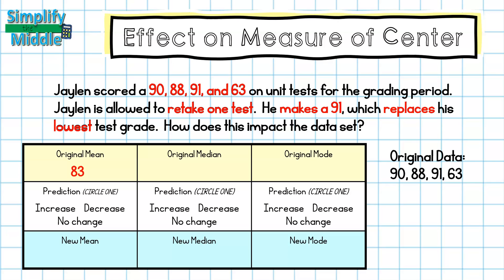Let's find our median. We need to put our data set in order from least to greatest, so I have 63, 88, 90, and 91. I'll eliminate values starting on my left and then going to my right until I reach the center. Since there are only four values, I end up in the center with two numbers: 88 and 90. On a number line, I know 89 is between them, so my median is 89.